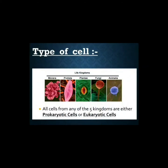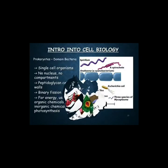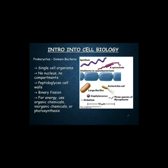The type of cell: all cells from any of the five kingdoms — Monera, Protista, Plantae, Fungi, and Animalia — are either prokaryotic cells or eukaryotic cells. In cell biology, prokaryotic refers to the domain Bacteria, which are single-celled organisms.